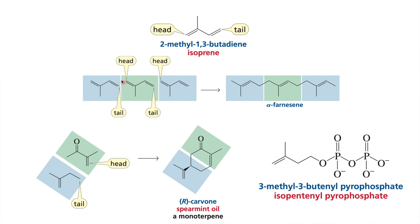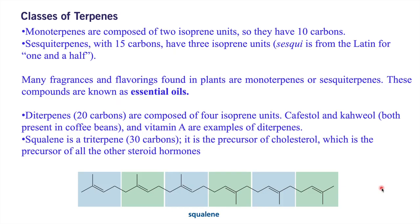The basic unit in biosynthesis of terpenes or terpenoids is isopentenyl pyrophosphate, which is 3-methyl-3-butenyl pyrophosphate. Monoterpenes consist of two isoprene units joined together, meaning they contain 10 carbon atoms, because each isoprene unit has 5 carbons and 8 hydrogens.